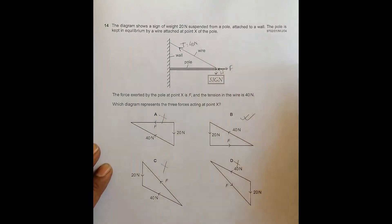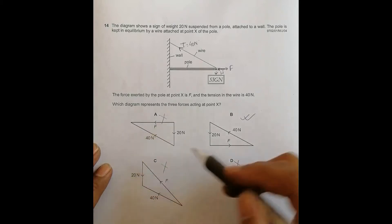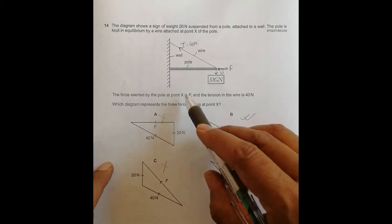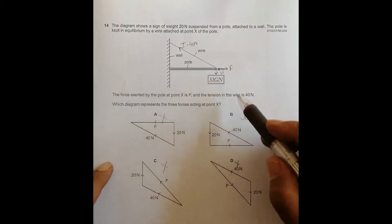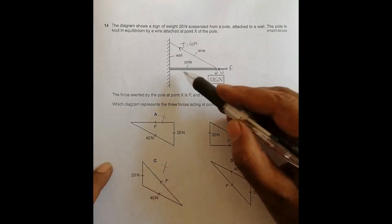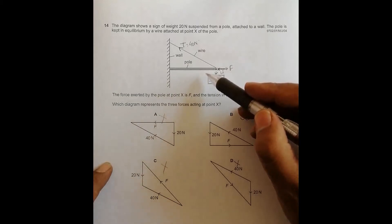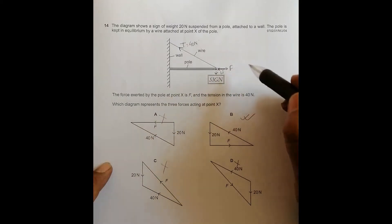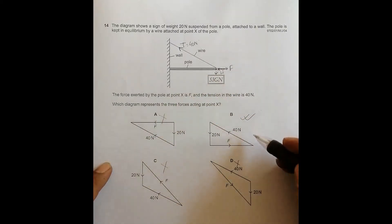So if you know the direction of all the forces, we can go for the answer very fast. Here, what disqualifies this is F is shown in a different direction, which is not correct. Here, different direction, not correct. And here it is opposite. We've been told that F is the force by the pole on point X. It can't be this because this is a solid thing with higher rigidity, and it will definitely be exerting this type of force. That's why it should be here. This is the correct choice.